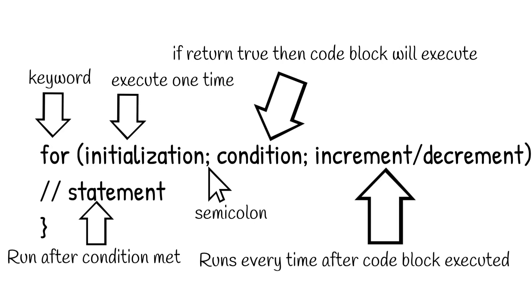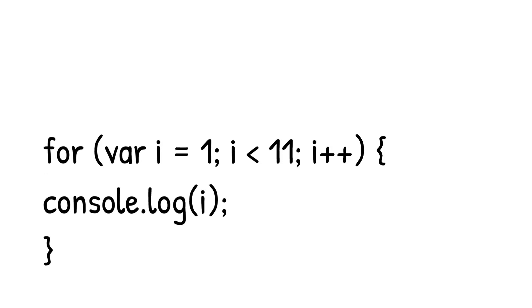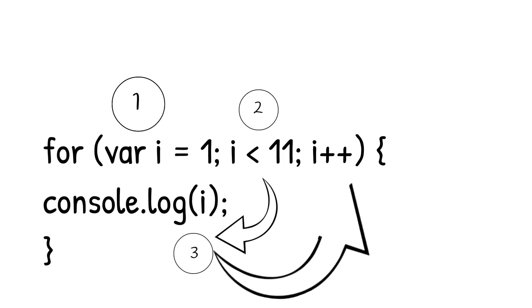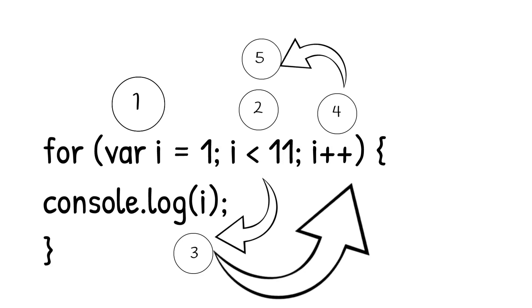Let's see this in our previous example. We initialize i to 1, then check the condition whether i is less than 11. Since 1 is less than 11, the code block executes and prints the value of i, which is 1. Then i is incremented to 2, and since 2 is still less than 11, it prints 2 — and so on from 1 through 10.